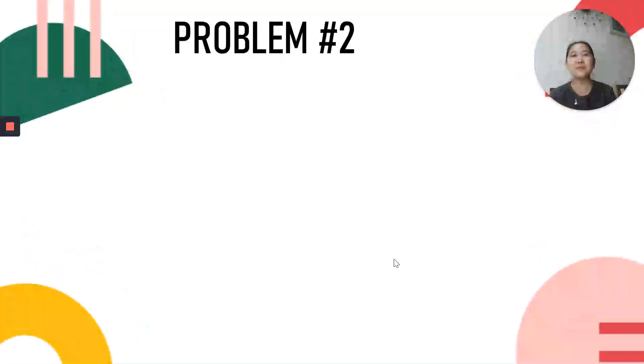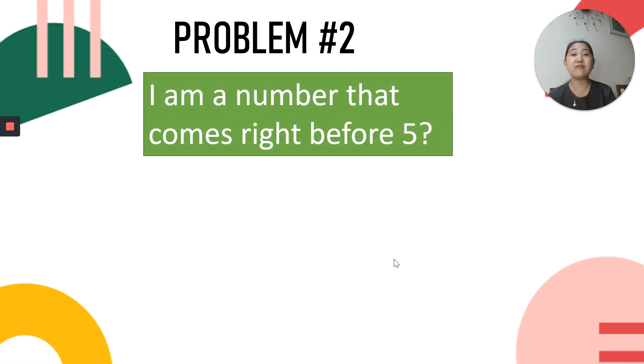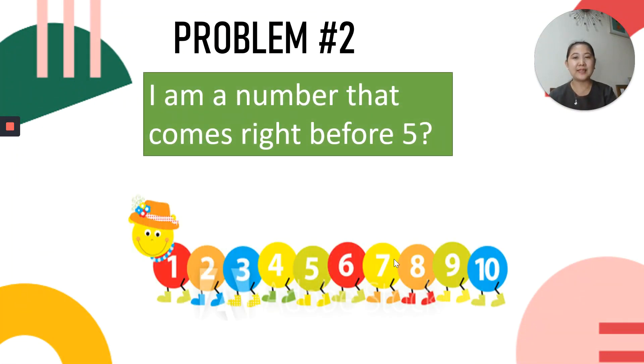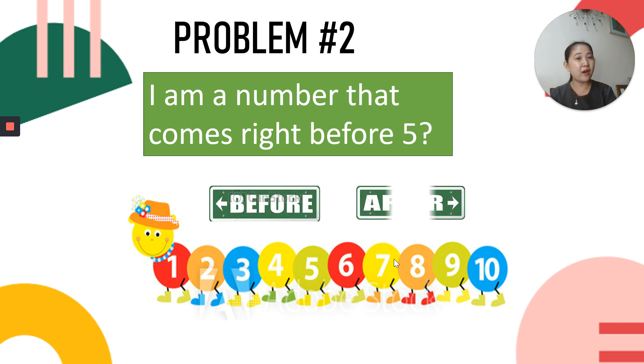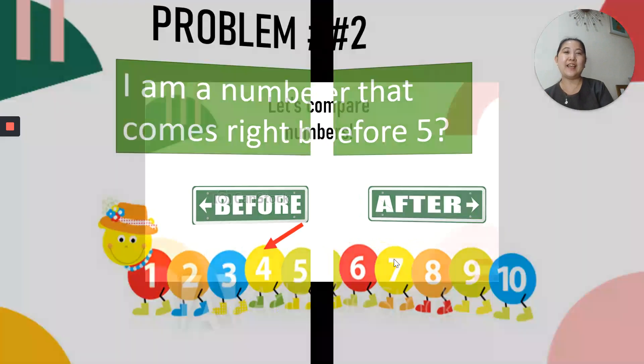How about this problem? I am a number that comes right before 5. Now, look at caterpillar again. Numbers going there is before. Numbers going there after. So, look at number 5. What number comes before 5? Yeah, right. It's 4. Very good. I'm giving you 2 stars for getting the correct answers. Good job, children.